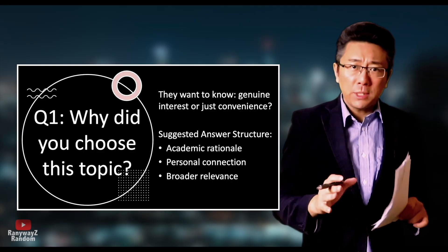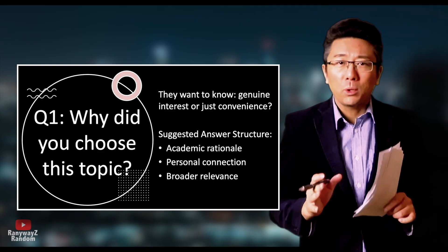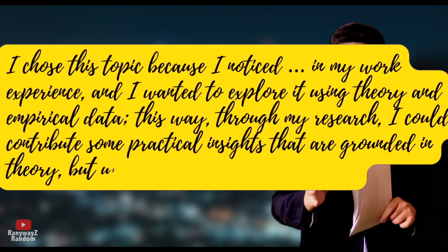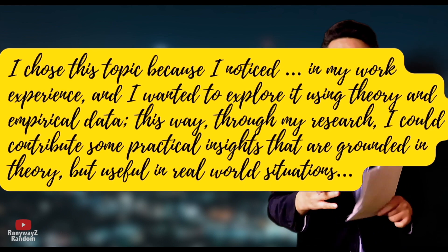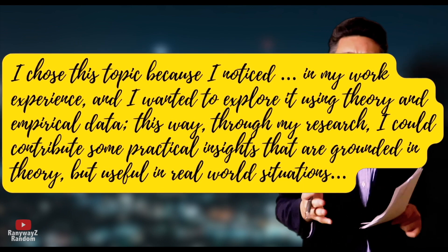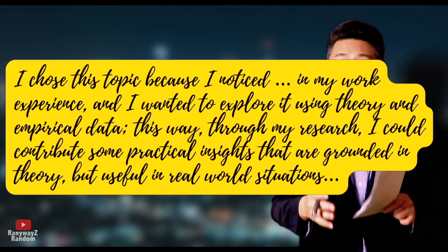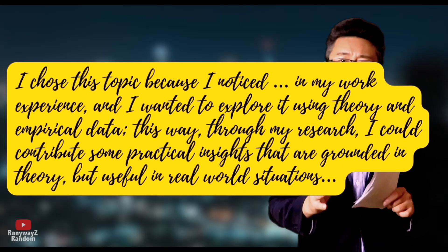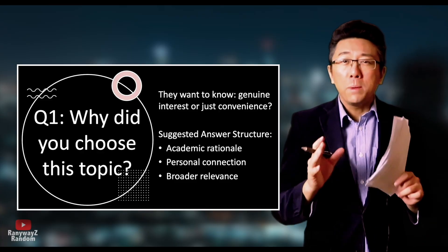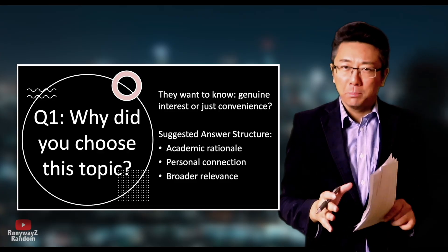Those three things are: the academic rationale for choosing this topic, a personal connection to the topic, and its broader relevance or implications. You could say something like: 'I chose this topic because I noticed a particular issue in my work experience, and I wanted to explore it using a specific theoretical framework and empirical data. Through my research, I could contribute practical insights that are grounded in theory but useful in real-world situations.' We offer a personal connection, mention academic relevance, and touch on practical implication.